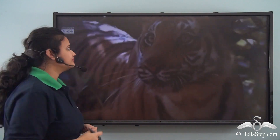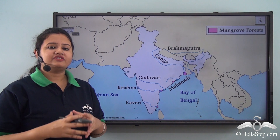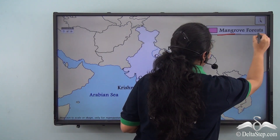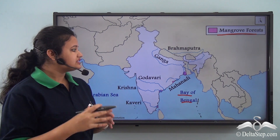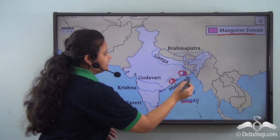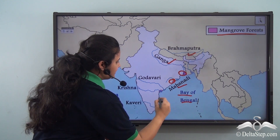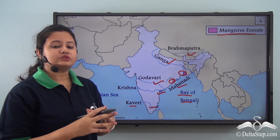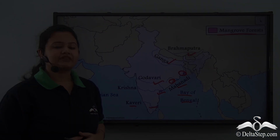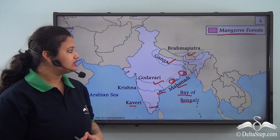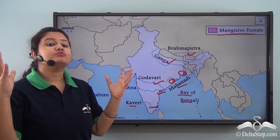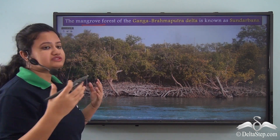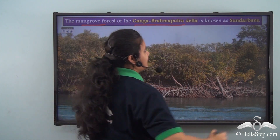The type of natural vegetation found along the coast of the Bay of Bengal is known as the mangrove forest. Specifically, this forest is found in the deltaic regions of many rivers. Among all these, the mangrove forest of the Ganga-Brahmaputra Delta is the largest and the most prominent one, and it is known as Sundarbans.